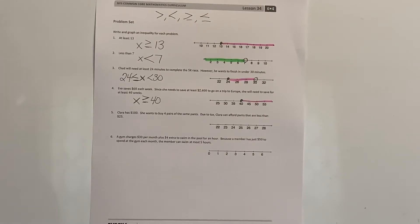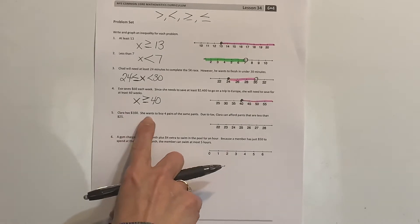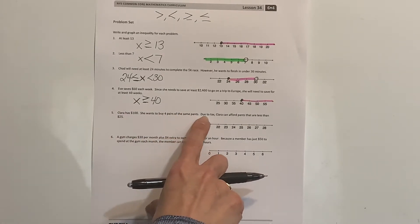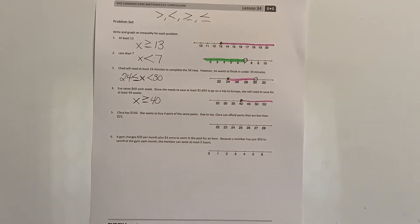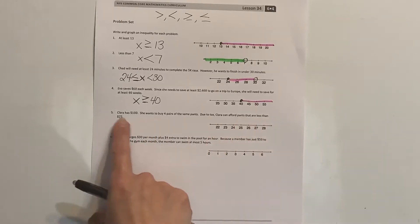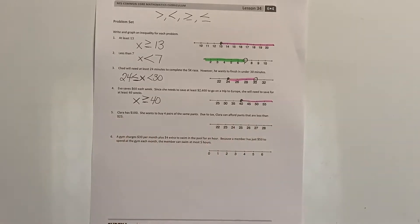Now Clara has $100. She wants to buy four pairs of the same pants. Due to tax, Clara can afford pants that are less than $25.